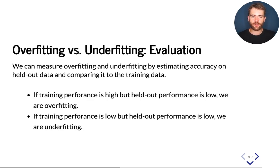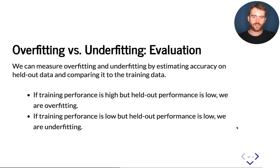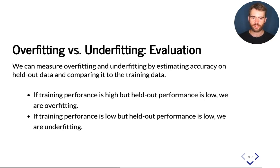How can we tell that our model is overfitting or underfitting? We'll revisit this more closely later in the course when we talk about how to deploy, analyze, debug, and improve machine learning models in practice. But at a high level, a model that is overfitting has really high training performance, but if we take a holdout set, the performance on that holdout set is going to be really low. Conversely, underfitting means that our training performance is going to be low and therefore the performance on the holdout set is going to be low as well.